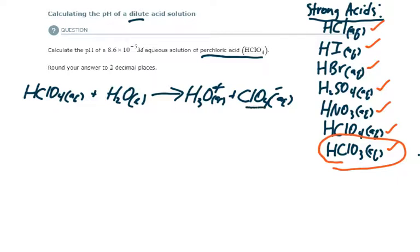Which is the perchlorate ion. Now, notice very carefully what I did here. I wrote a unidirectional arrow, which means that this reaction essentially is only going in the forward direction. There is no equilibrium established here.